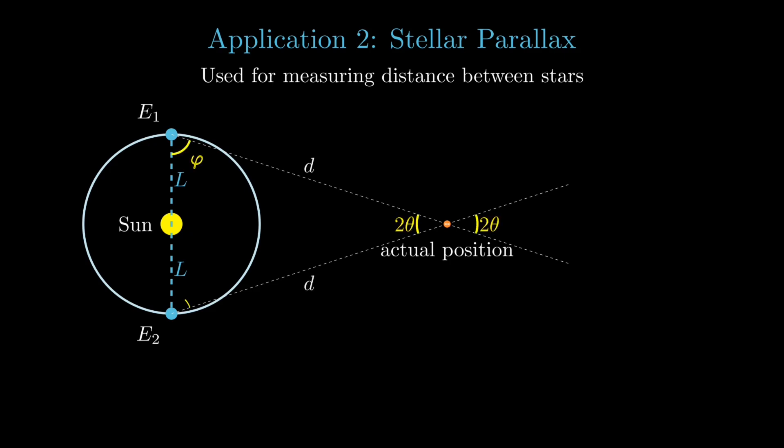In our diagram here, theta is our parallax angle, and with the aid of small angles, we can simplify calculations significantly. We approximate the relationship simply as theta equals L over D, where D is the distance to the star. By rearranging the expression, we directly get the star's distance as D is L over theta.